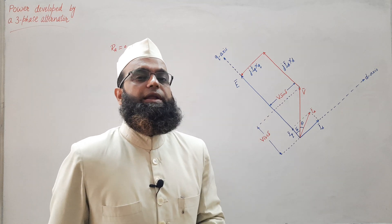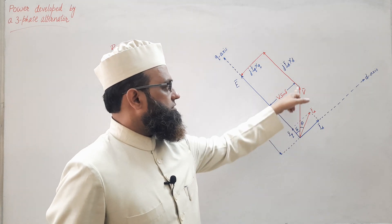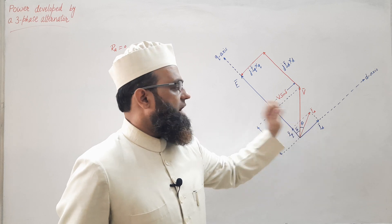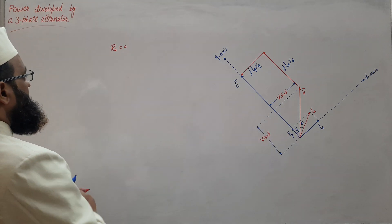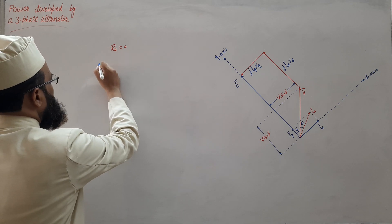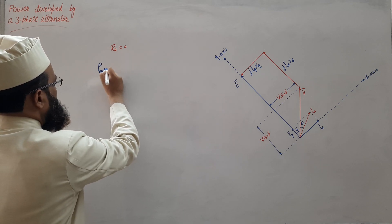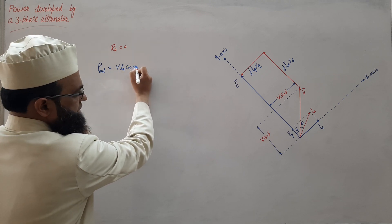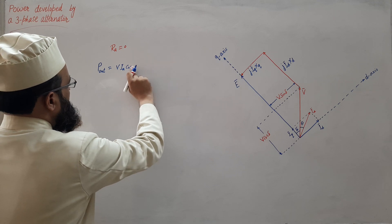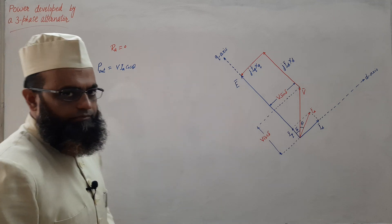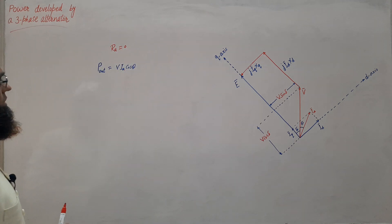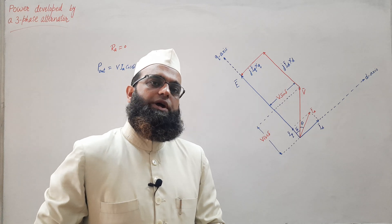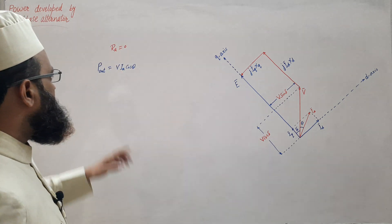The synchronous generator is generating electrical energy, so terminal voltage per phase is V and the armature current (phase current) is Ia. We may write power output: P_out = V·Ia·cos(theta), where cos(theta) is the power factor. This is the per phase power output.